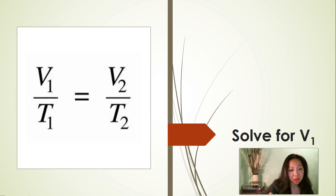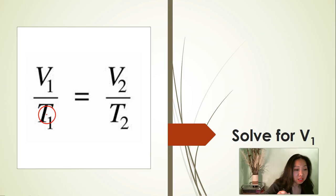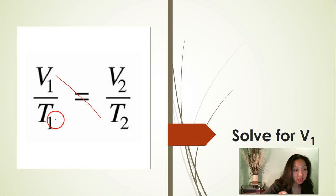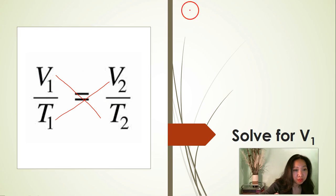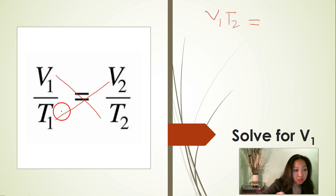Now let's solve for V1. This formula has both numerator and denominator, and we need to always get rid of the denominator first before we can solve for the unknown. We can do that by cross multiplying the left side and the right side of the equation. So we are going to rewrite that equation: V1 times T2 is equal to V2 times T1.